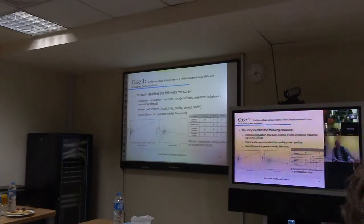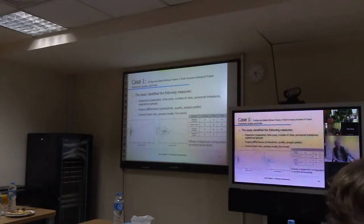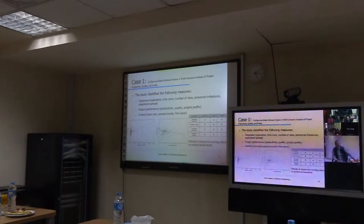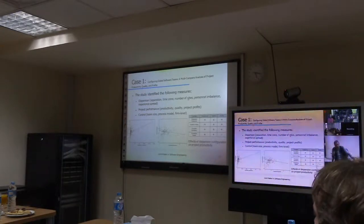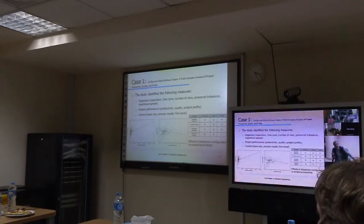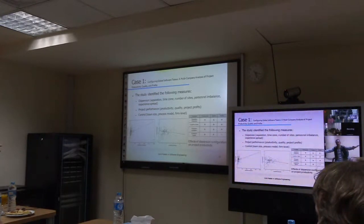That study identified the following measures for GSD. Dispersion is in terms of how far away these people are in my lens, how many sites you have, what's the imbalance between personnel. Do I have a lot of experienced people inside A and inexperienced people inside B?